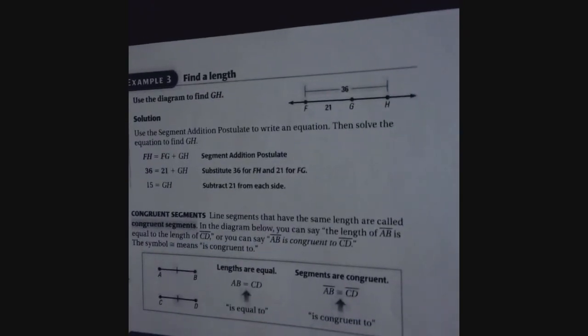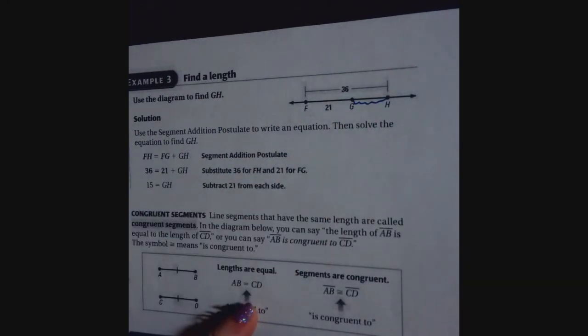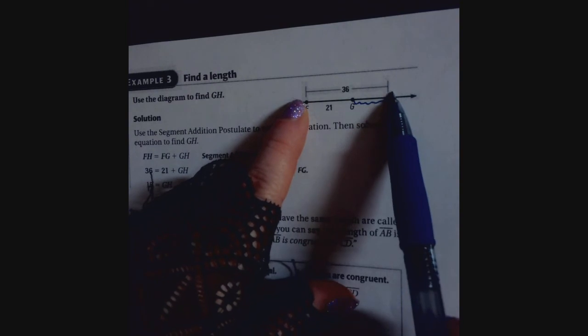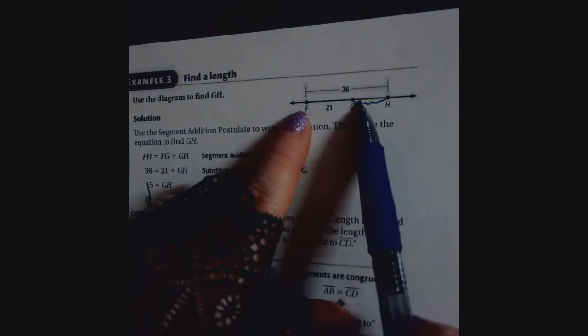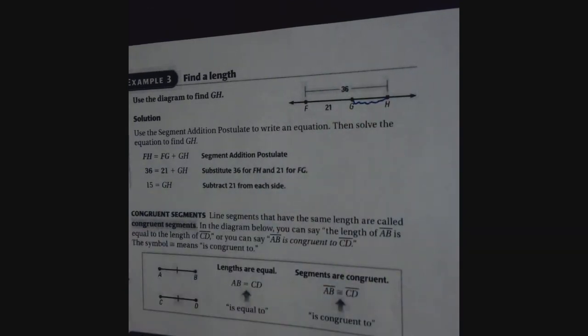So here we're going to find a length. Use the diagram to find GH. So they want this portion. So make sure you look at everything and you're real careful to answer what they're looking for. So we're going to use the segment addition postulate to write an equation. We know that FH is 36. The entire length is 36. And the entire length is made up of FG, so FG is 21 plus GH. Those two added together give us FH. So in geometry, you're going to find that everything goes back to algebra. So you have to remember all your algebra skills from Algebra 1 because you're going to be adding and multiplying and it's always going to come down to algebra.